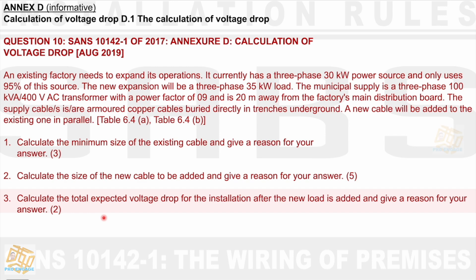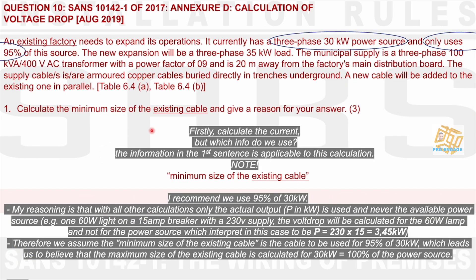Right, number 1 goes like this 10.1. It says calculate the minimum size of the existing cable and give a reason for your answer for 3 marks. Firstly, calculate the current but which info do we use. So we have 3 phase 30 kW power source and it only uses 95% of its source. This is a problem. How do we interpret this? So the information in the first sentence or the second sentence is applicable to this calculation. Note, minimum size of the existing cable. Okay. Question 1 says calculate the minimum size of the existing cable. That should be a key because for me that stood out. I recommend that we use 95% of 30 kW.